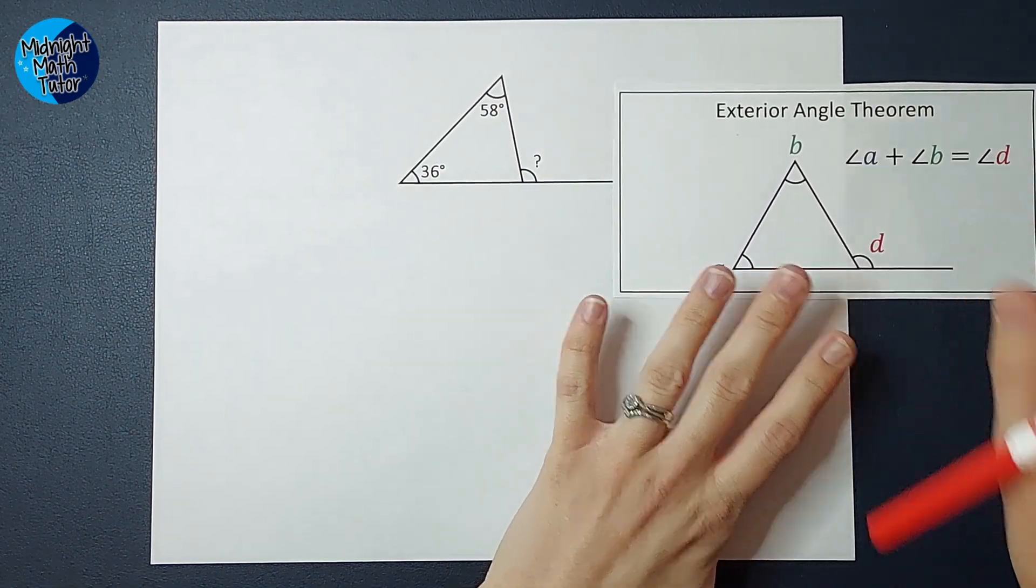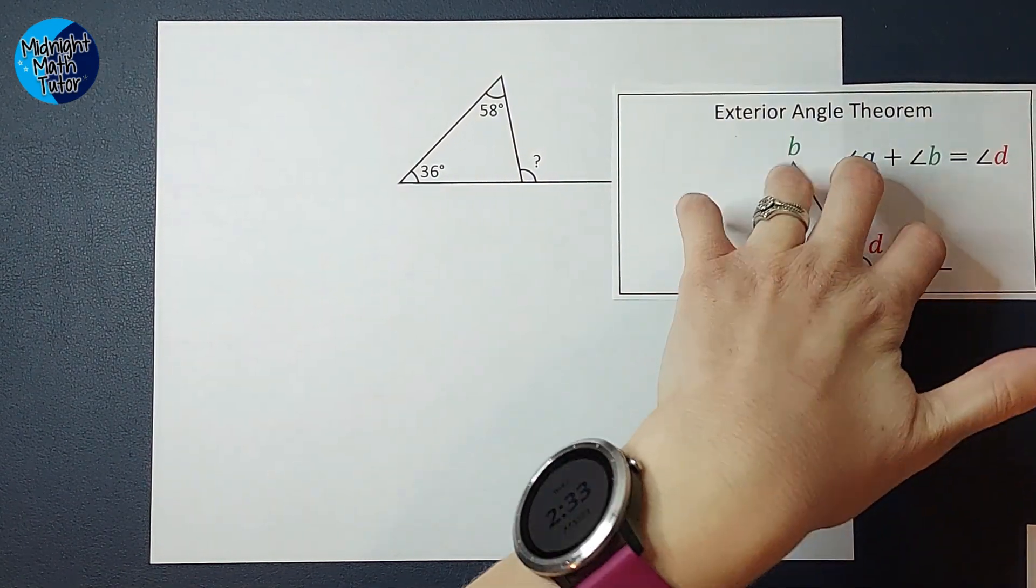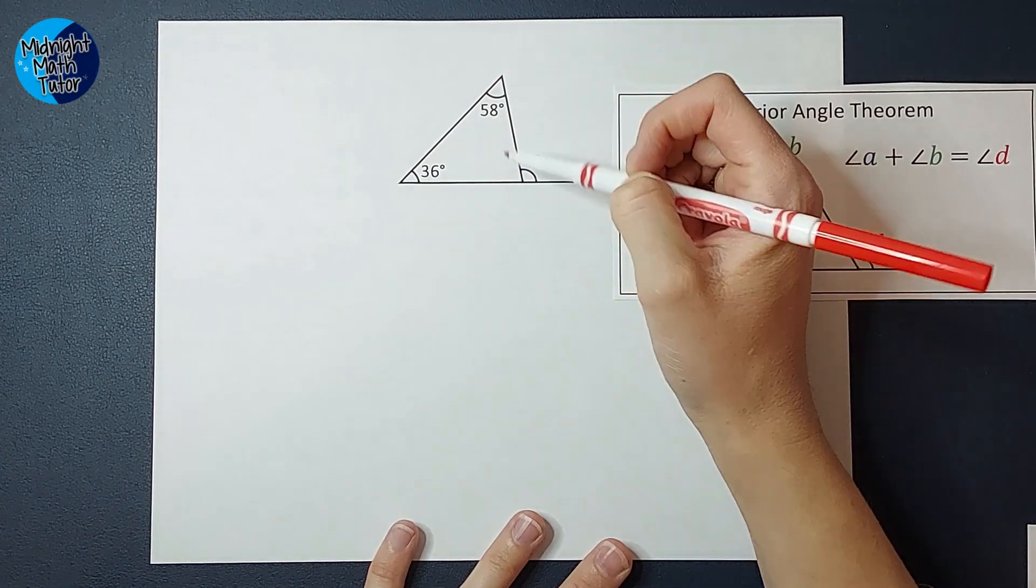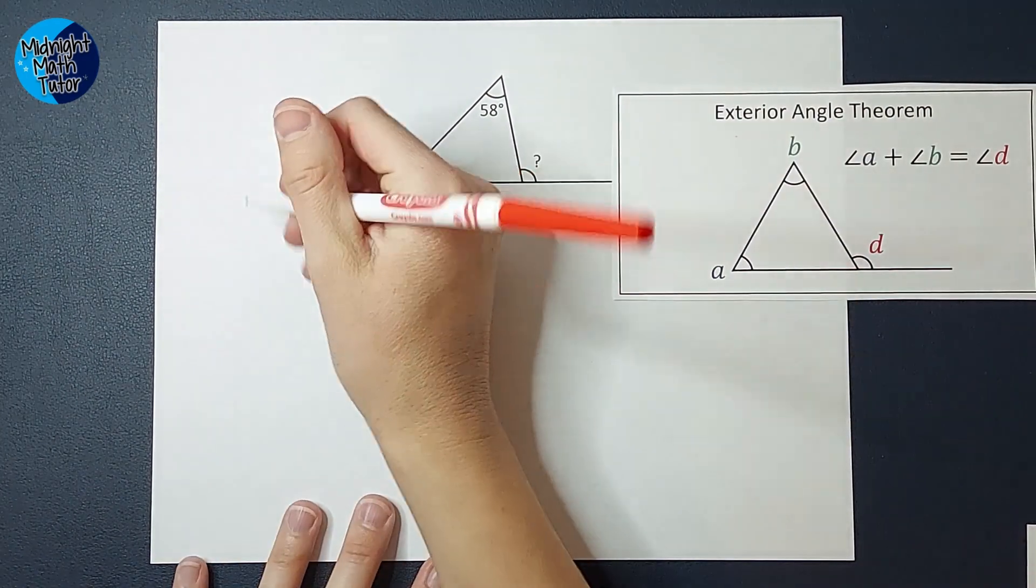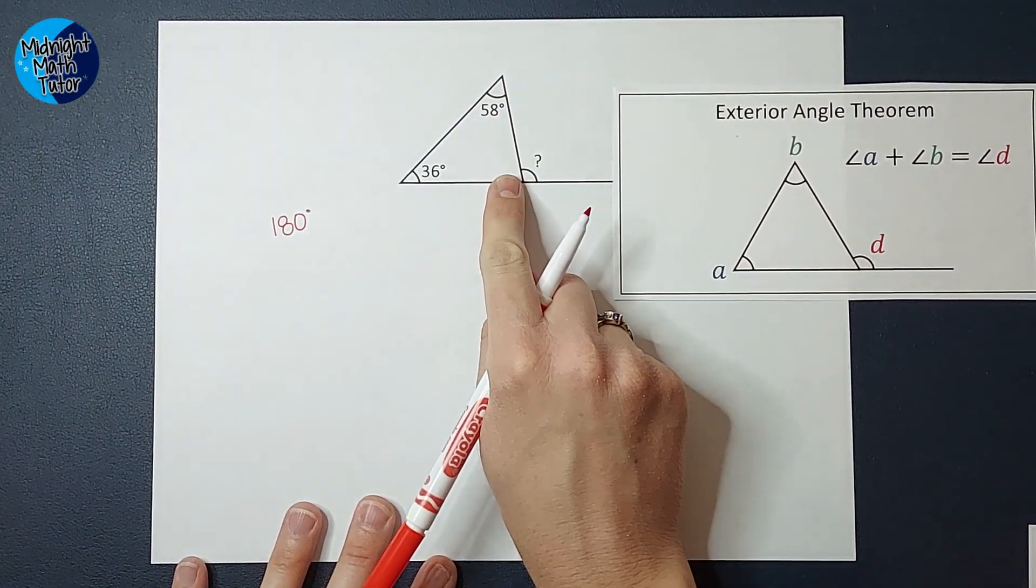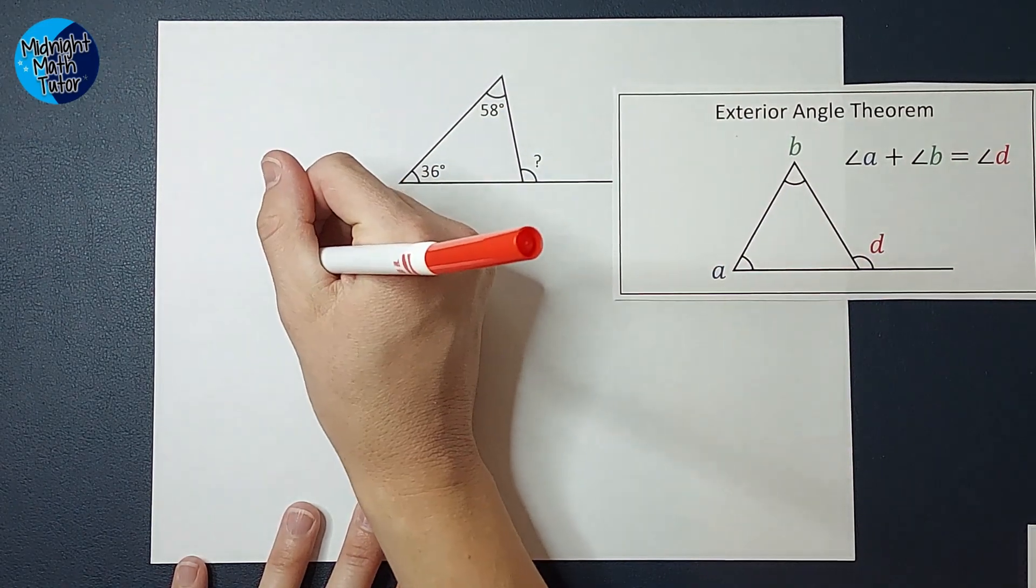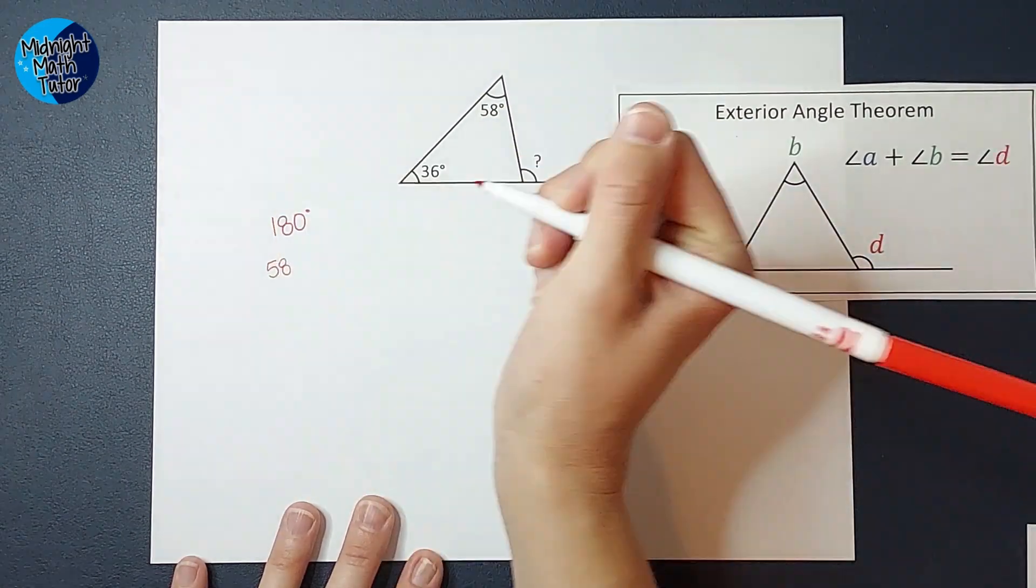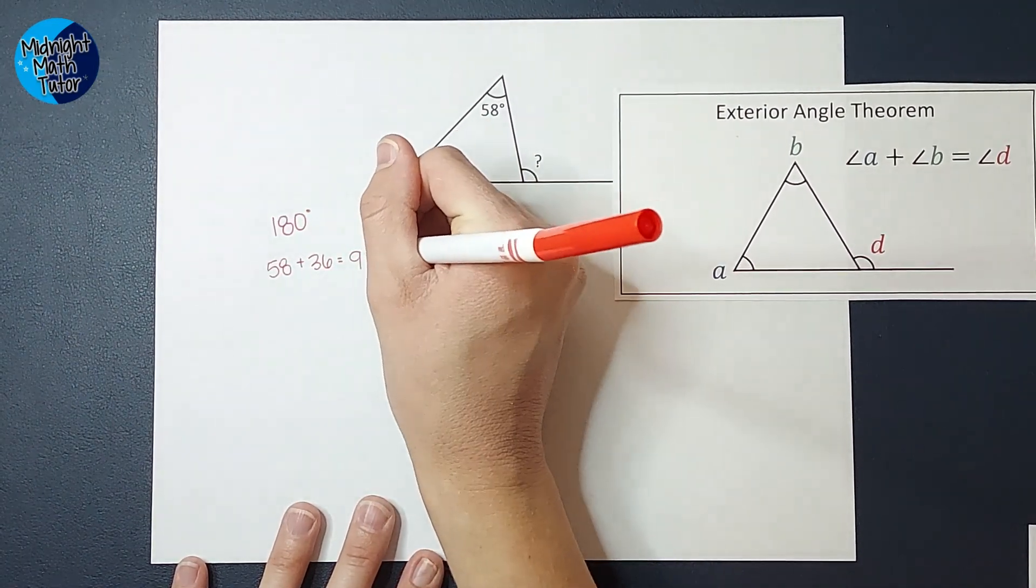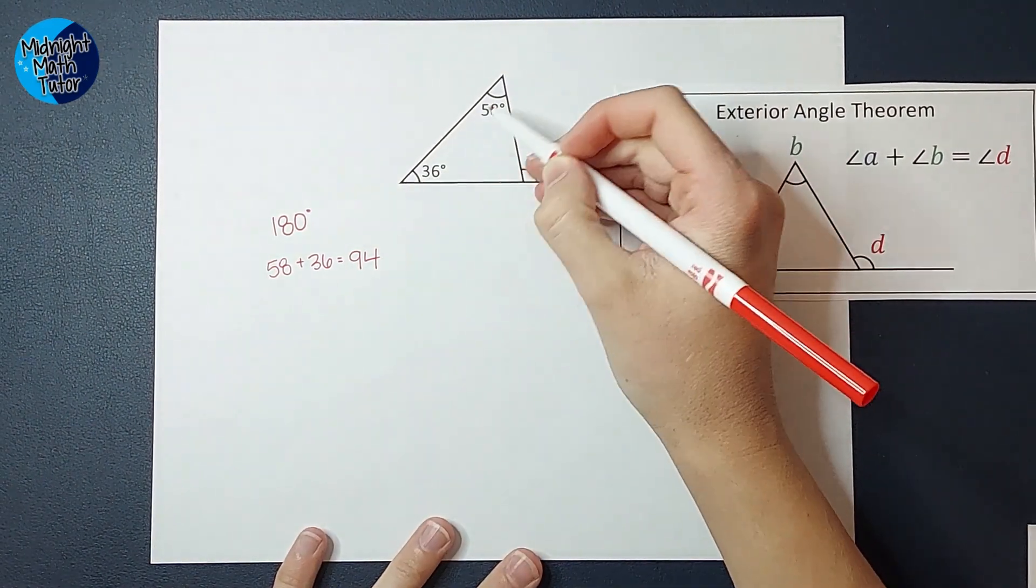So there is another way I could solve this if I didn't know about this theorem. And that would be, I know that the three angles of a triangle always add to 180 degrees. So to find this angle, I just need to add these two together. So I'm going to take 58 plus 36, and I end up with 94.